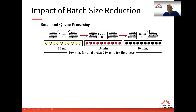After 10 minutes on Process A, the batch moves to Process B — same thing, one minute per item, so 10 minutes on Process B. Then it moves to Process C, again one minute per item for all 10. The total time to complete the whole order is 30 minutes without any setup time between processes, and the first piece comes off after 21 minutes: 10 minutes on A, 10 on B, then one minute into Process C.